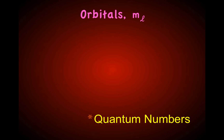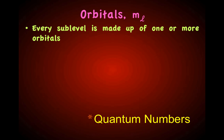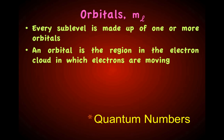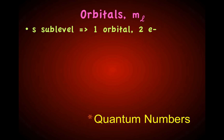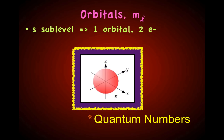The third quantum number describes orbitals. Every sublevel is made up of one or more orbitals. An orbital is the region in the electron cloud in which the electrons are moving. It refers to how the orbital is directed in space — its orientation. Each orbital can hold two electrons. An S sublevel has one orbital, which means any S sublevel can hold two electrons.